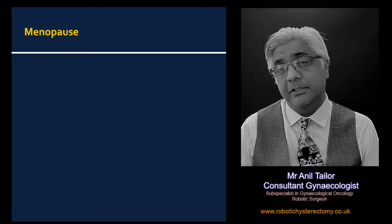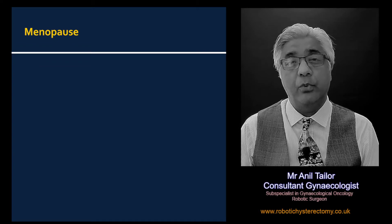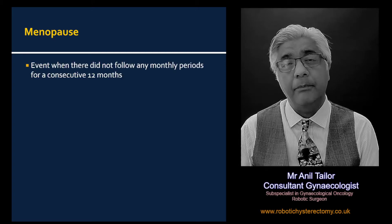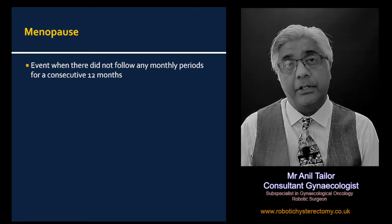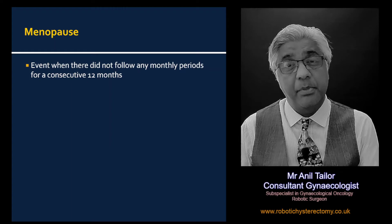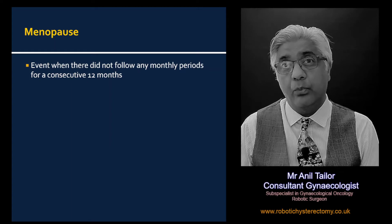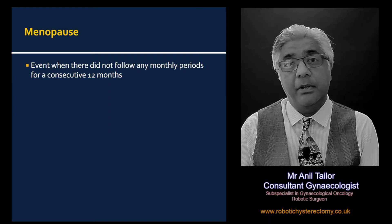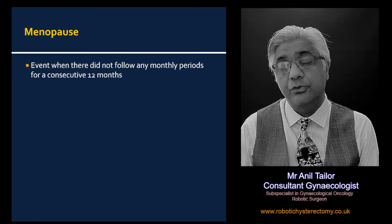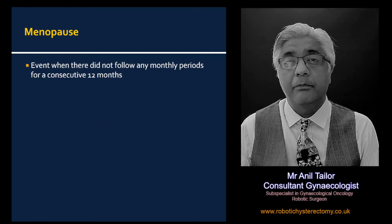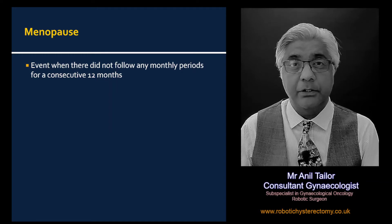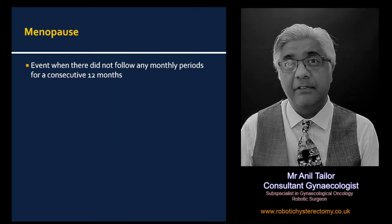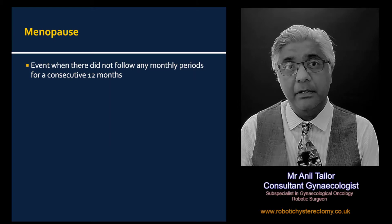In our previous videos I have described what menopause is. Briefly, it is an event that occurs usually at the last period, following which the woman does not experience any further periods for at least 12 months. So it's a retrospective diagnosis — the woman doesn't know that she is menopausal until 12 months have elapsed since the last period.